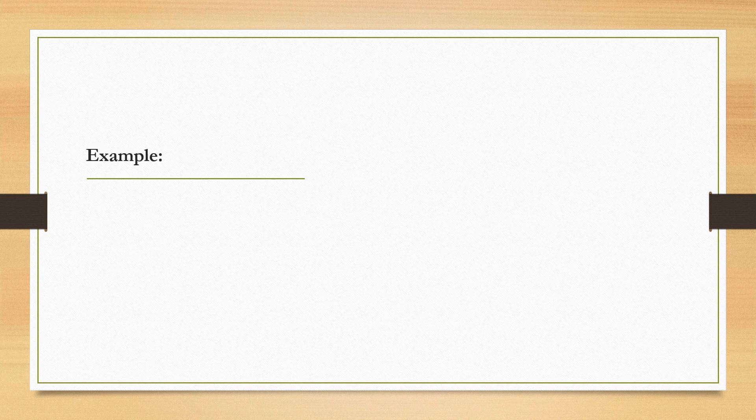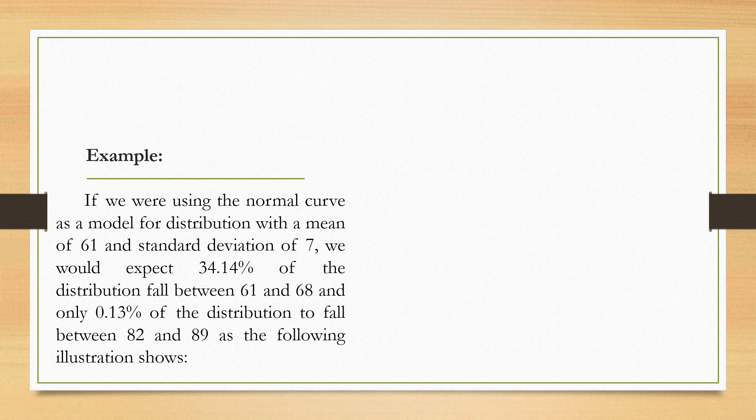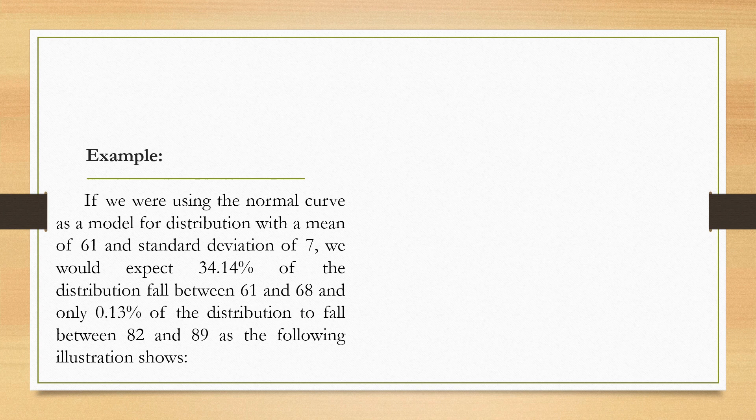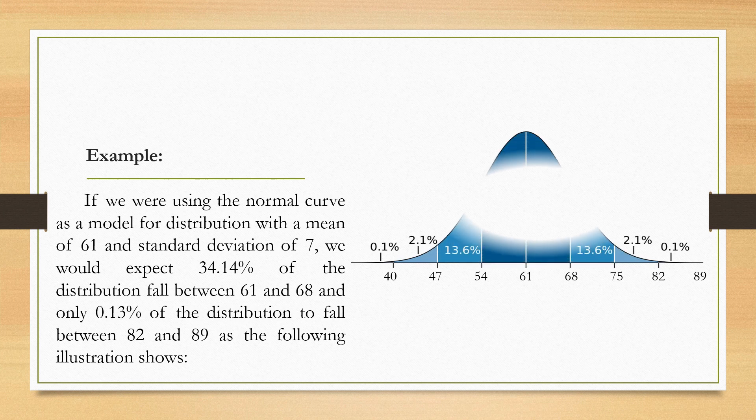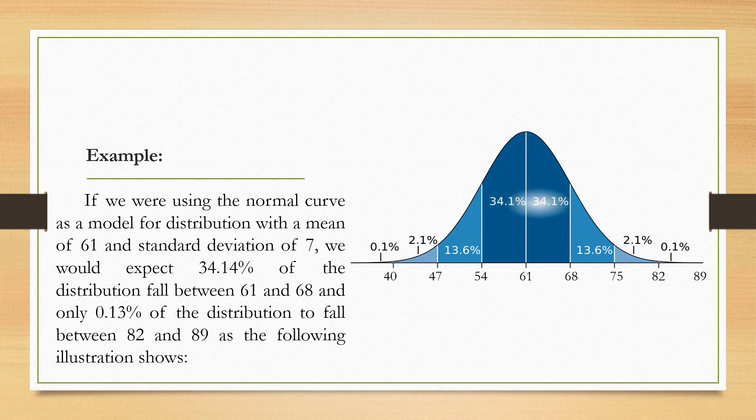For example, if we were using the normal curve as a model for distribution with a mean of 61 and a standard deviation of 7, we would expect 34.14% of the distribution to fall between 61 and 68 and only 0.13% of the distribution to fall between 82 and 89. Notice that for a distribution with a mean of 61 and standard deviation of 7, seven points are added for each SD unit above the mean and seven points are subtracted from the mean for each SD unit.